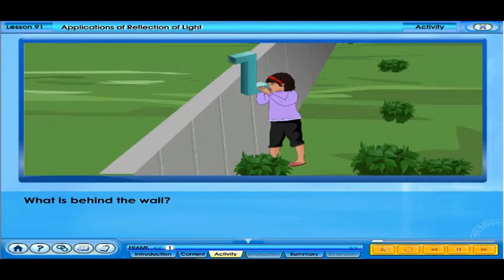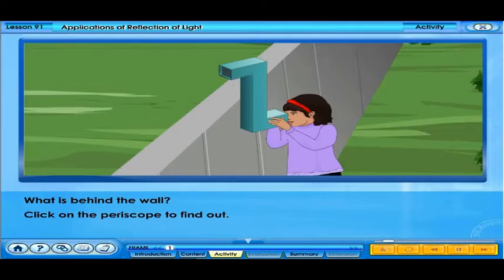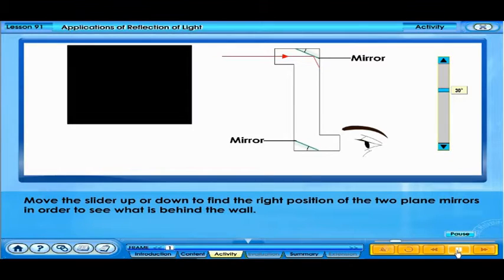What is behind the wall? Click on the periscope to find out. Move the slider up or down to find the right position of the two plane mirrors in order to see what is behind the wall.